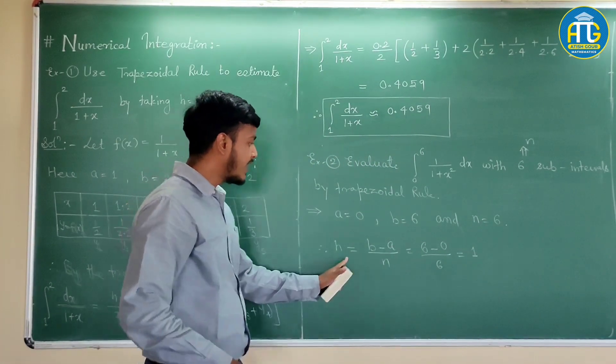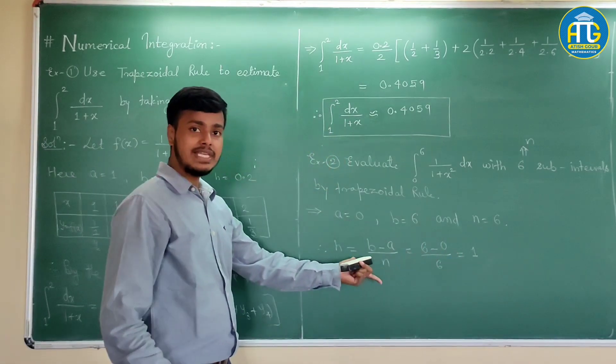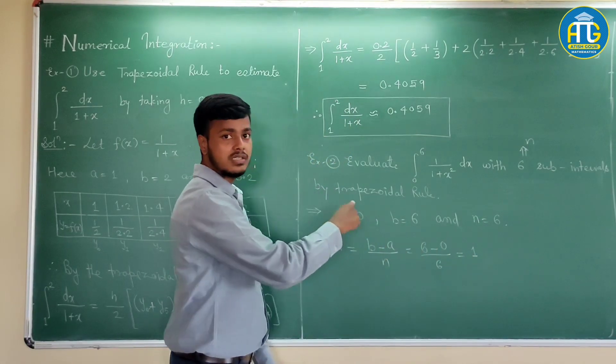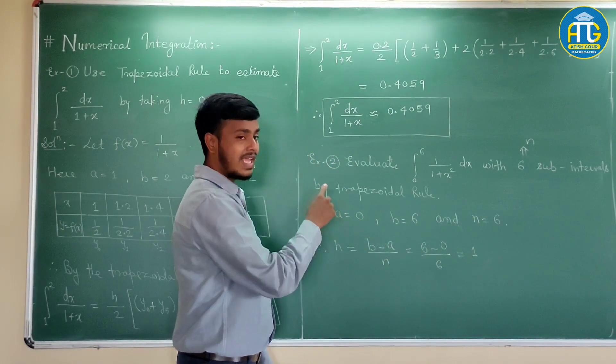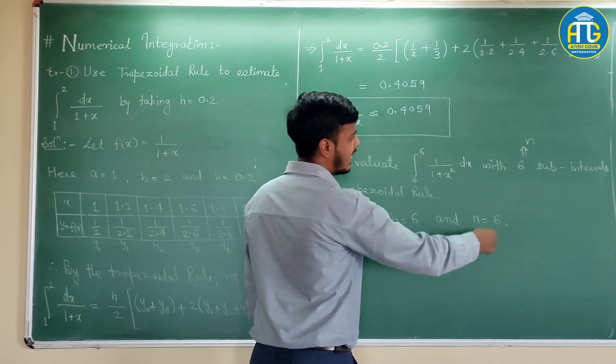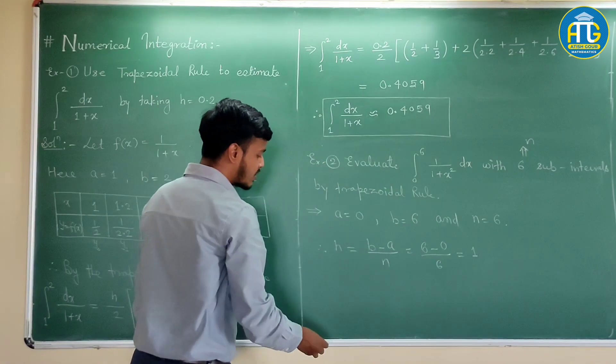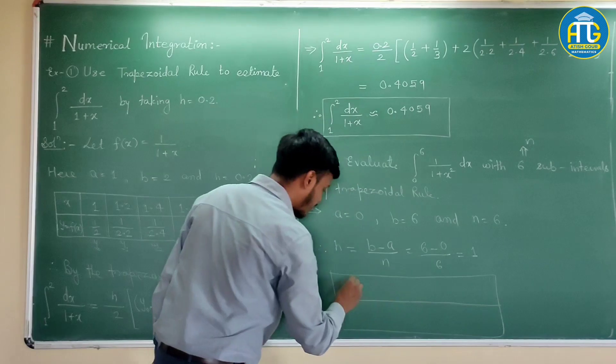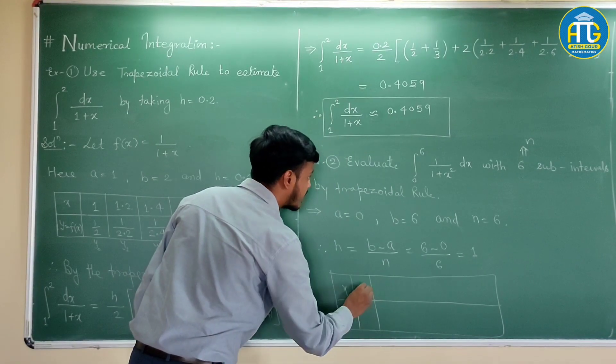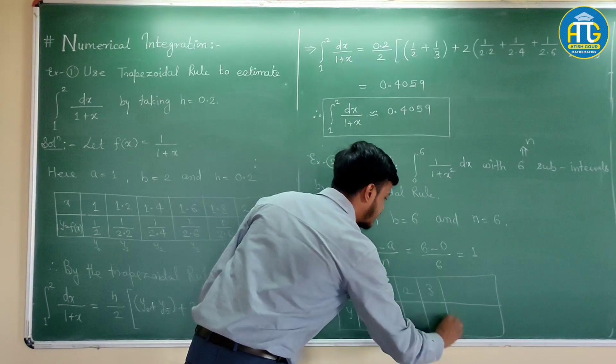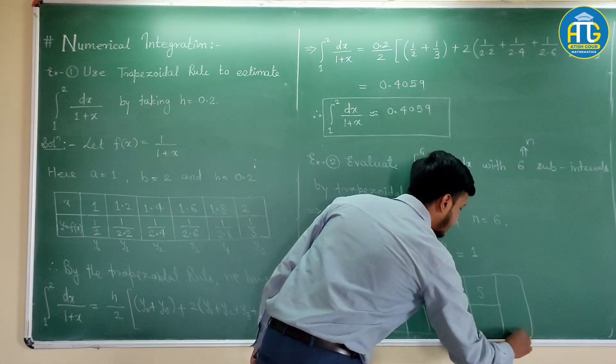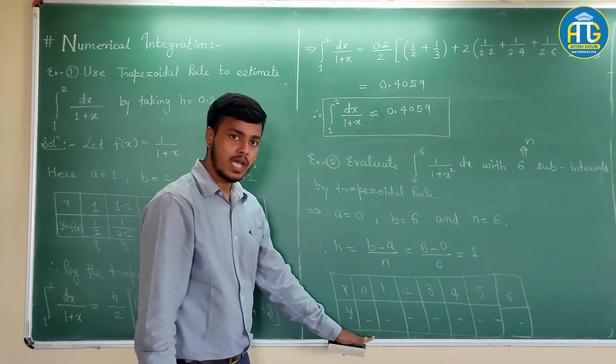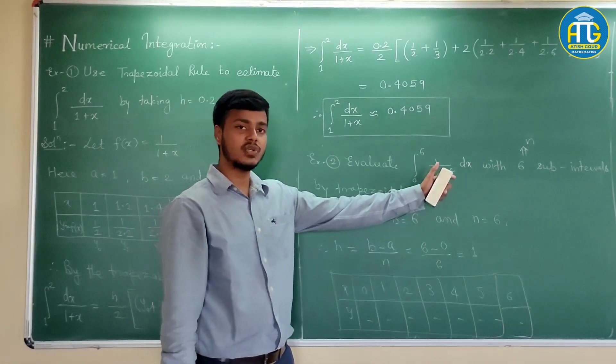Once you get the value of h to be 1, then it is very easy to divide this interval into 6 intervals. Each 2 successive terms of x would be having a difference of 1. You can draw the table. You can have the values of x, values of y. So it starts from 0, 1, 2, 3, 4, 5 and here it is 6. Corresponding values you can find out. After finding out these values, you can easily find out the integration of this.